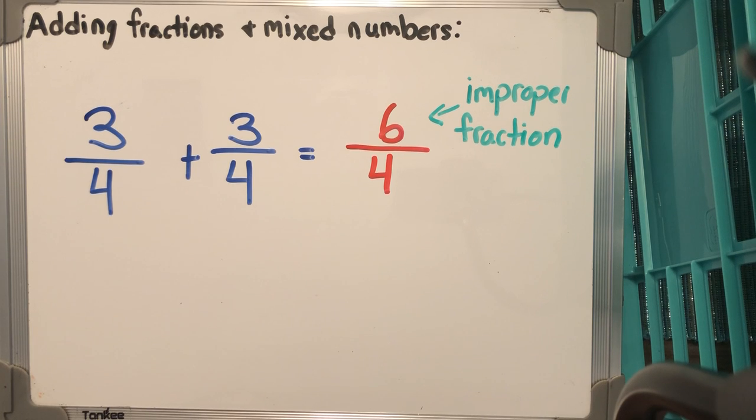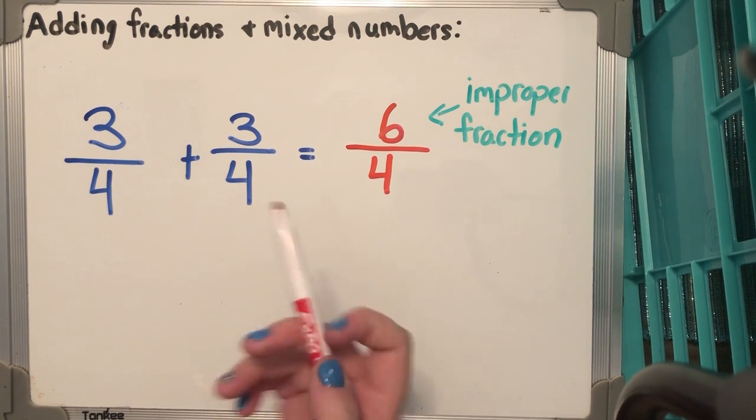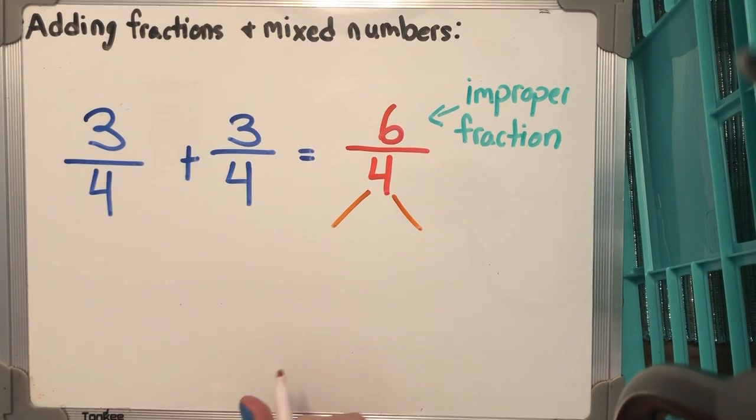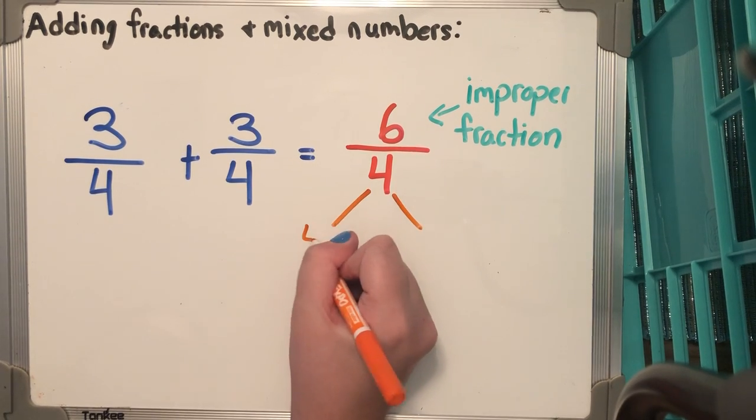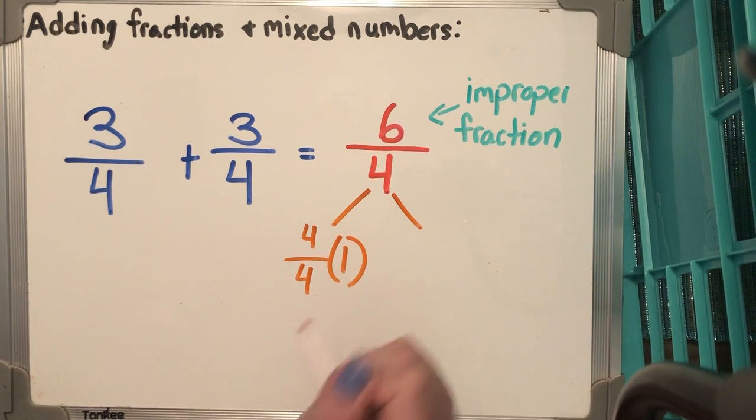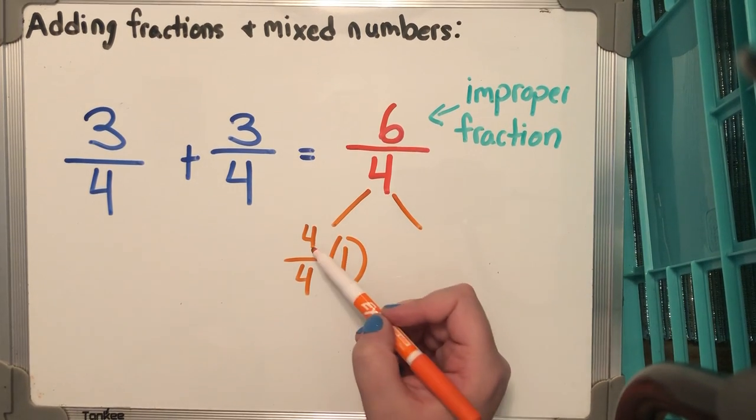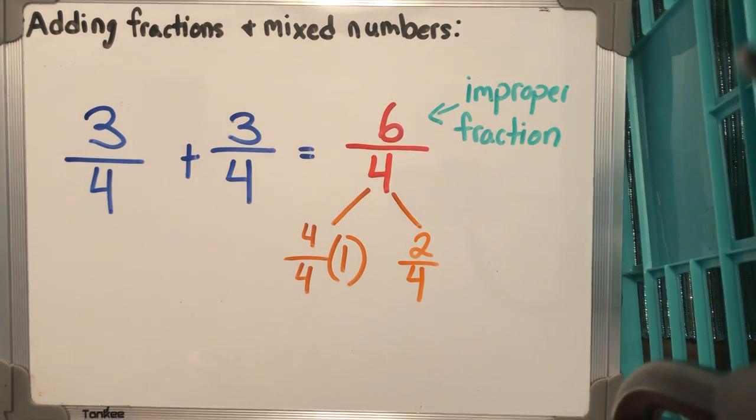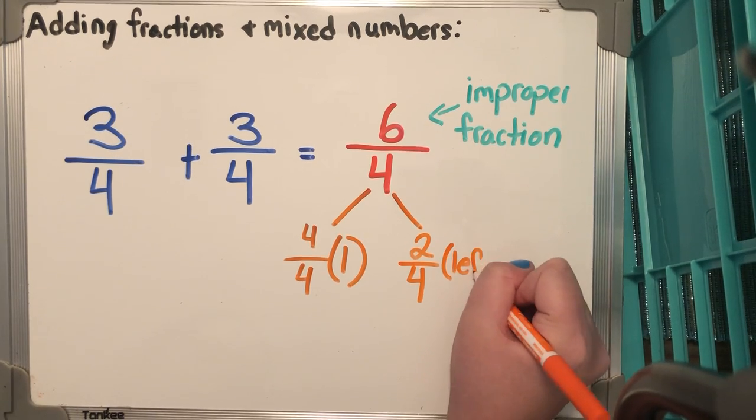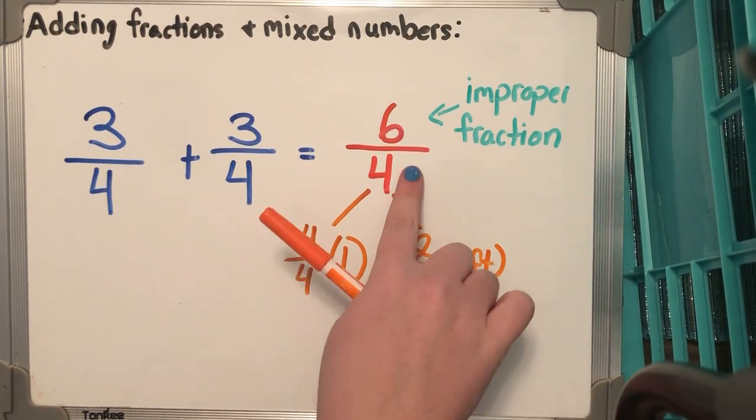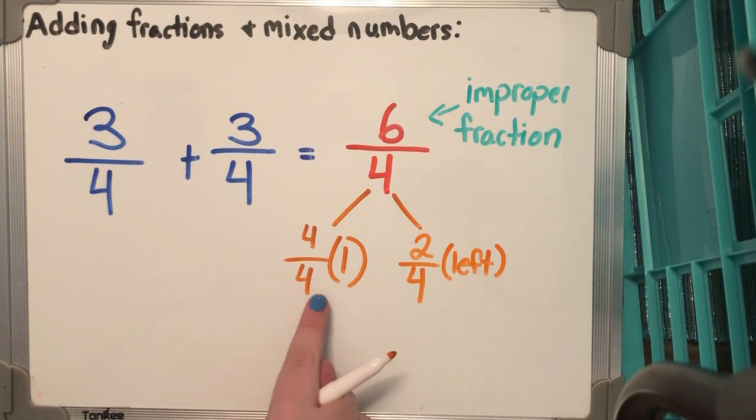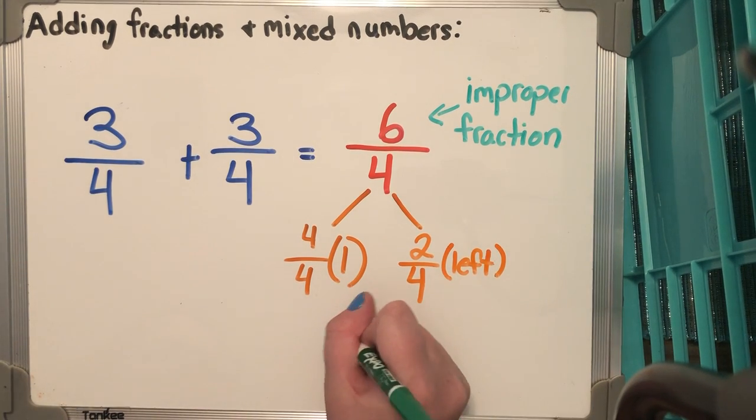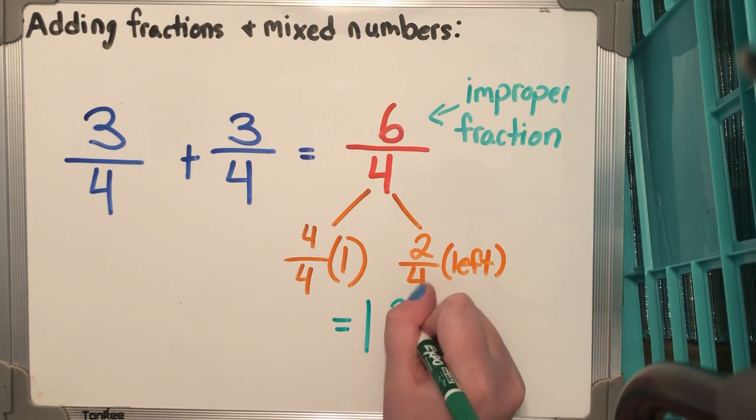And when that happens, we have to turn this improper fraction into a mixed number. And how we do that is basically I'm going to split the 6/4. I know that 4/4 is going to give me one whole. And how many do I have left? If I have 4/4, which is a whole, I'm going to have 2/4 remaining. Because that's how much I have left. I have 4/4 + 2/4 will give me 6/4. So I split that 6/4 into one whole and 2/4 left. Which means that I get a total of 1 2/4.